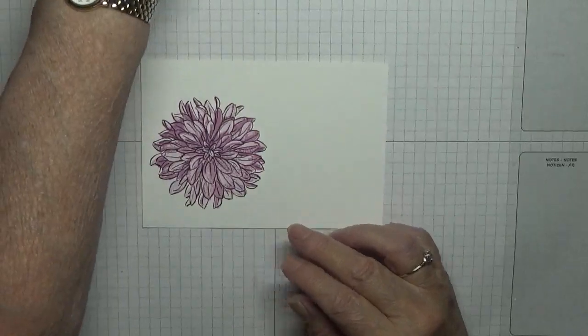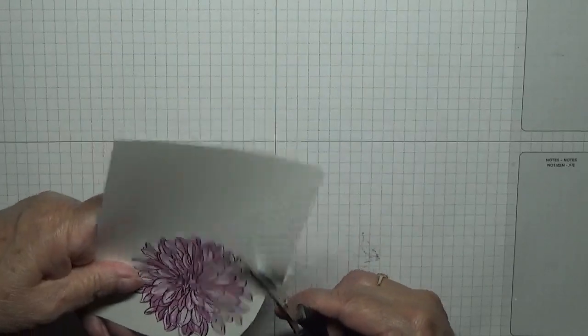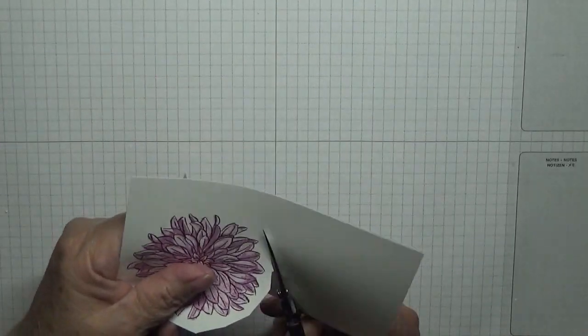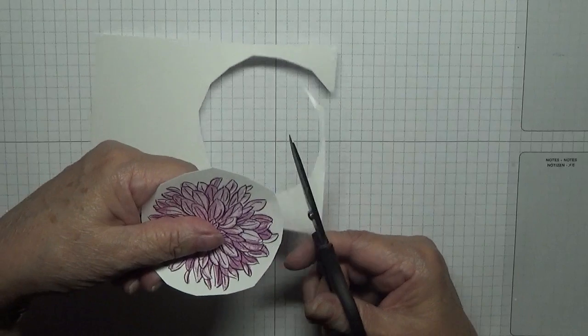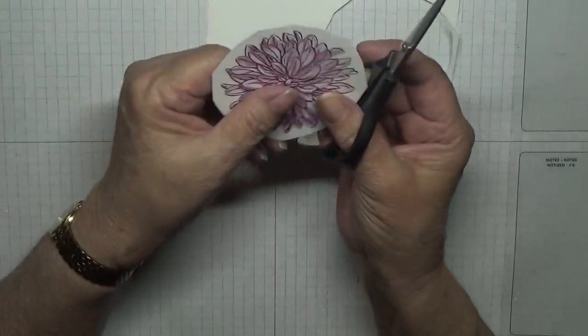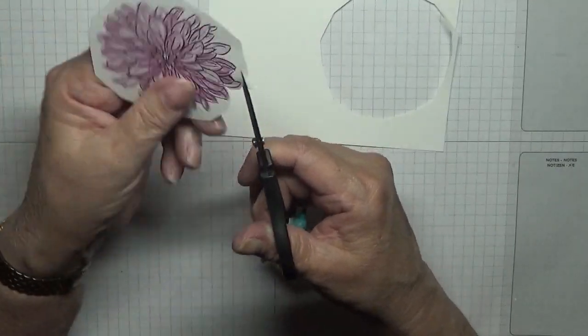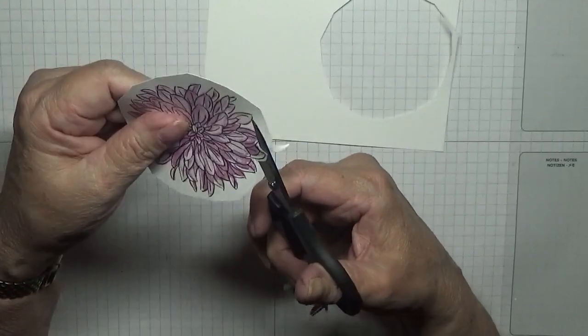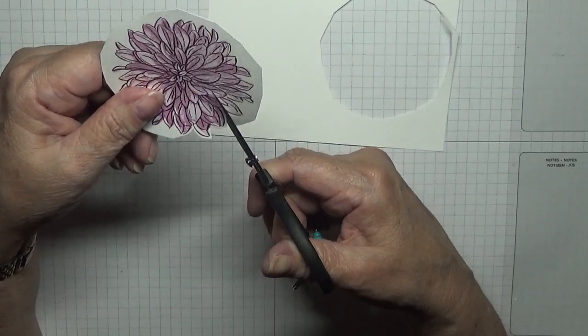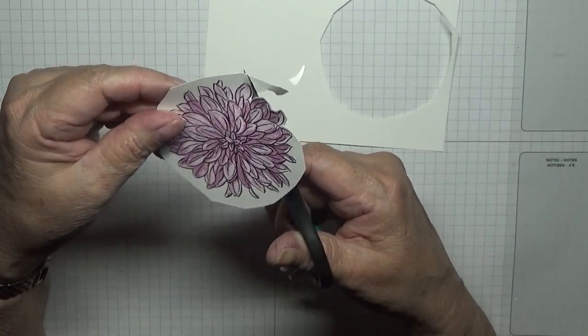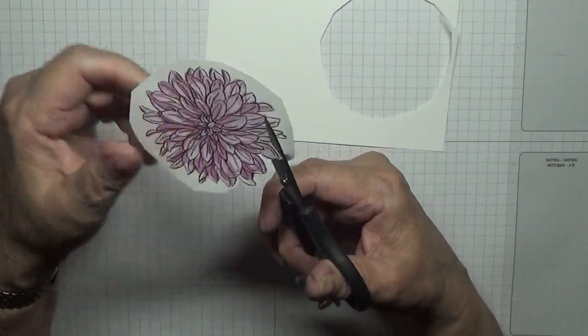Now because there's no dies you have to cut this out by hand, and I found the easiest way to do that is cut it in a circle first. And then just go in close, move the flower round, don't move your scissors. Just move your cardstock.